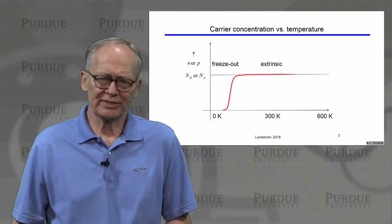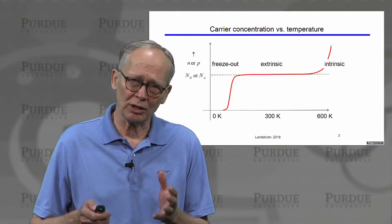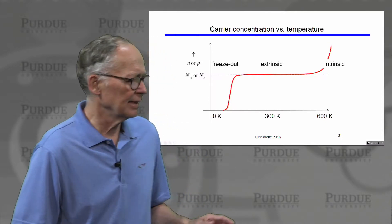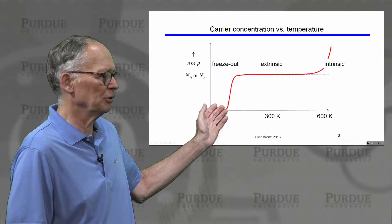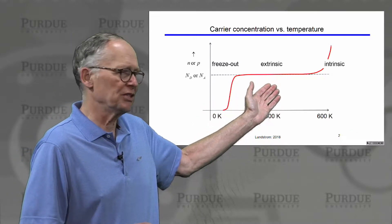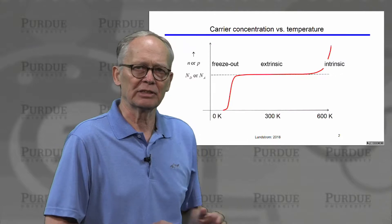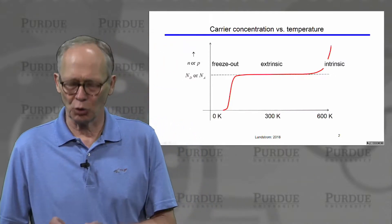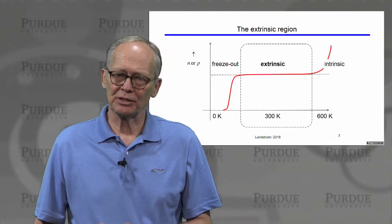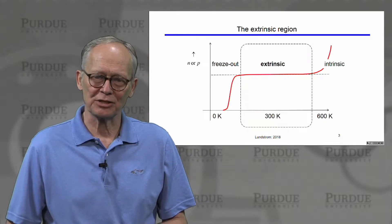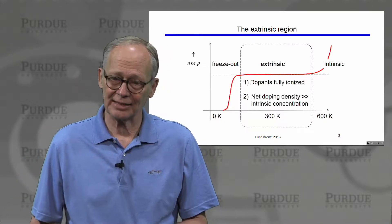We've seen this characteristic shape discussed qualitatively earlier in the course: at low temperatures the dopants freeze out and there are no carriers. Then there is the extrinsic region discussed in the previous lecture, and the intrinsic region where the intrinsic carriers overwhelm the dopants. This extrinsic region is a simple, nice region to operate in.